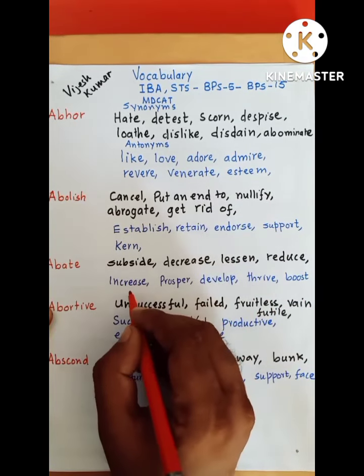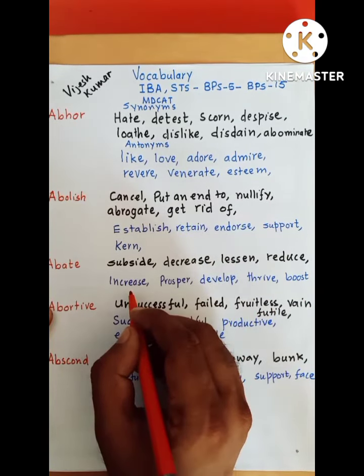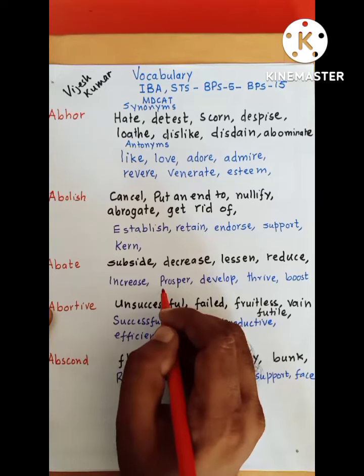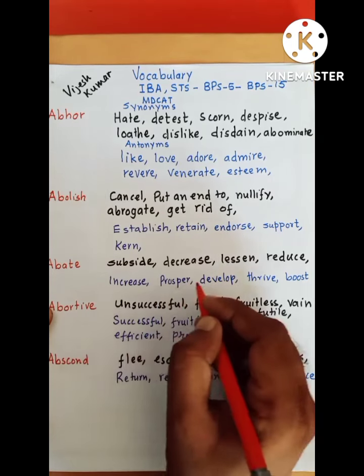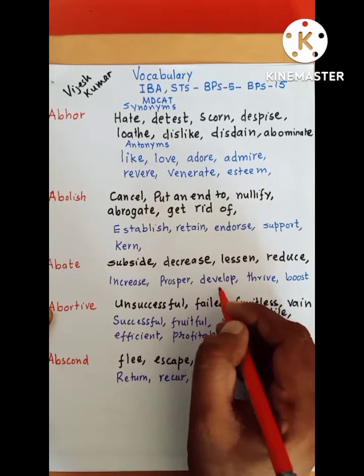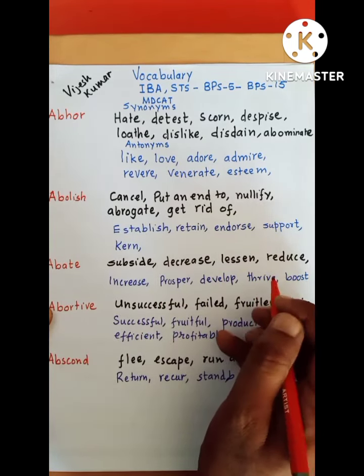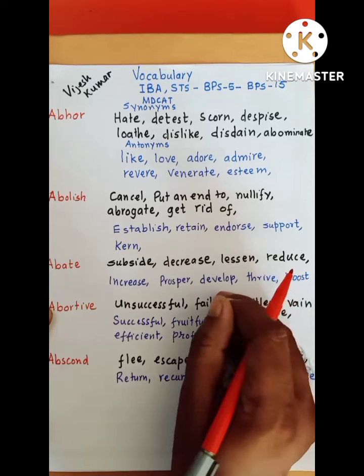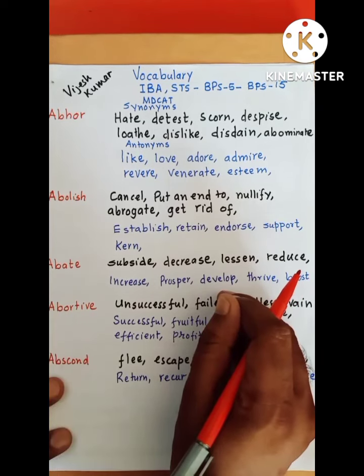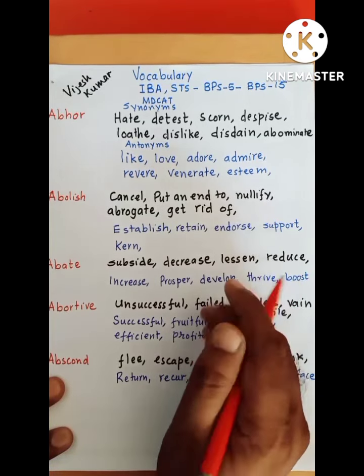Its antonyms are increase, prosper, develop, thrive, boost. These are the antonyms of the word abate.